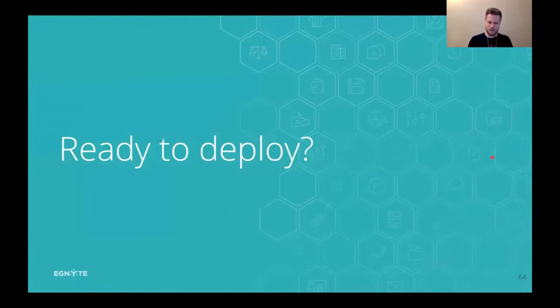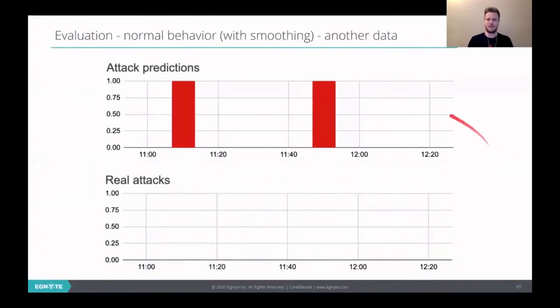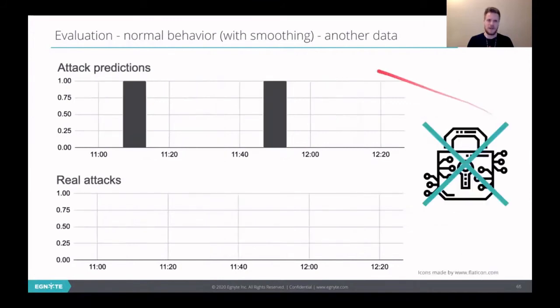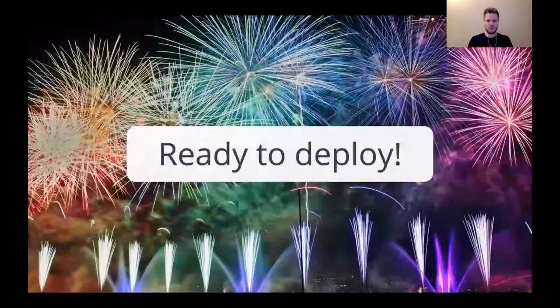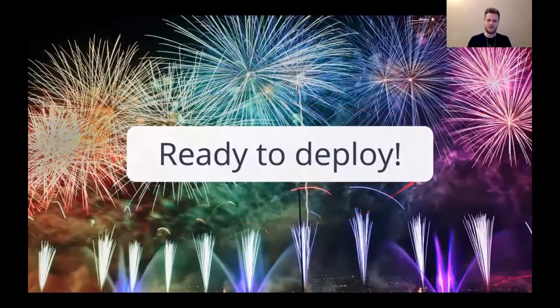And so are we ready to deploy now? We need to go back to our previous example of false positives even with smoothing on this another dataset. And let's check it again with our file encrypted detector. And we can see that here there is no attack because the files are not encrypted. So now we are finally ready to go to production with our solution.